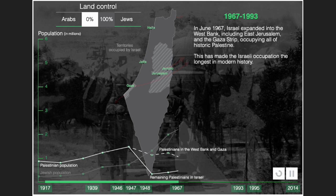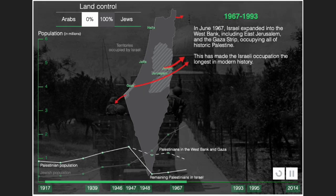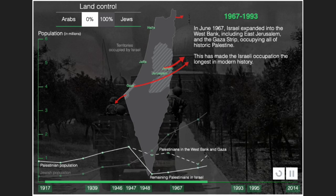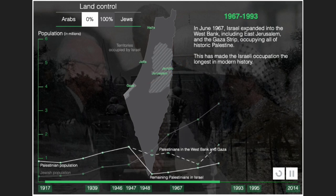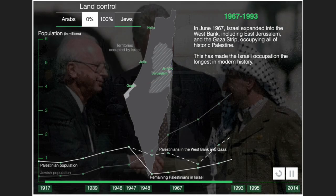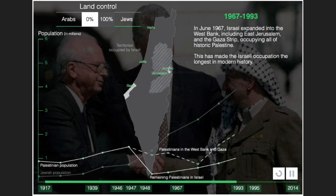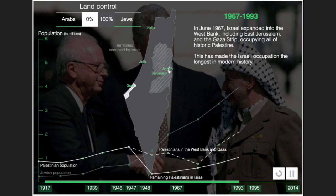In June 1967, Israel expanded into the West Bank — including East Jerusalem — and the Gaza Strip, occupying all of historic Palestine. This has made the Israeli occupation the longest in modern history.